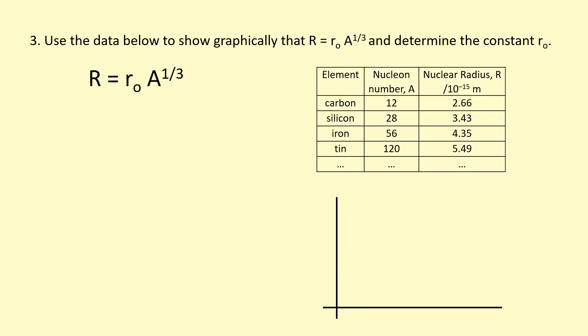In question three, use the data to show graphically that R is equal to R naught A to the third. Determine R naught. Here we already know that the power, the N, is a third. We're just going to figure out R naught. So in this case, we don't have to take logs. It's just much easier to compare this directly to y equals mx plus c.